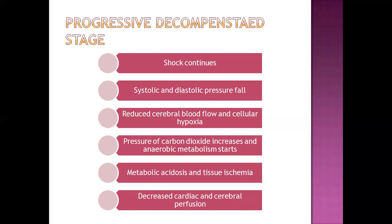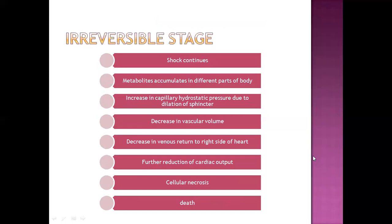From the progressive stage, there is no chance of reversal due to low perfusion to the heart and brain. In the irreversible stage, metabolites accumulate in different parts of the body. This causes increased capillary hydrostatic pressure, increased capillary volume, and decreased vascular volume. There is decreased venous return — blood cannot return to the heart — resulting in cellular necrosis and possibly death.